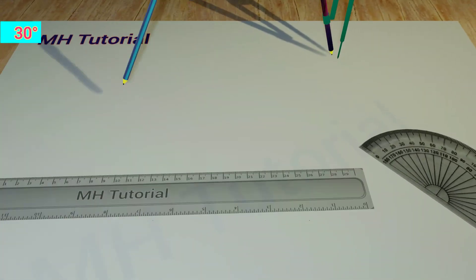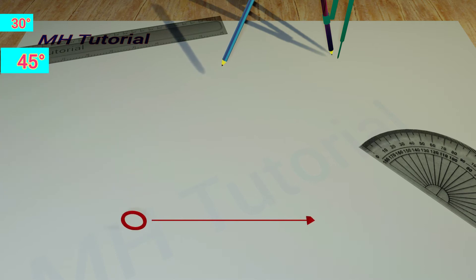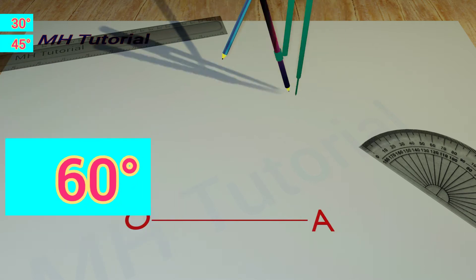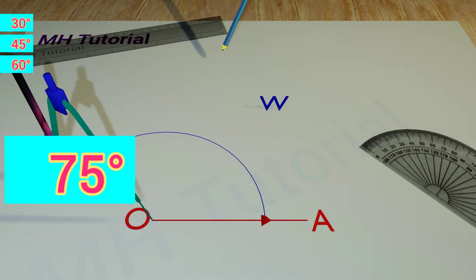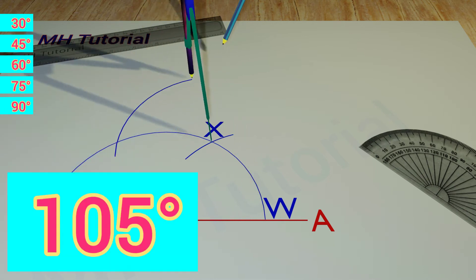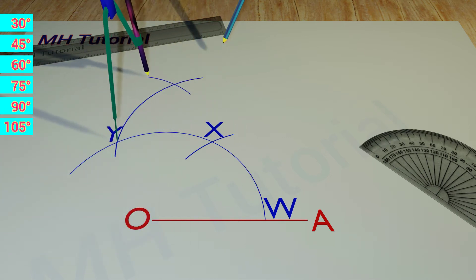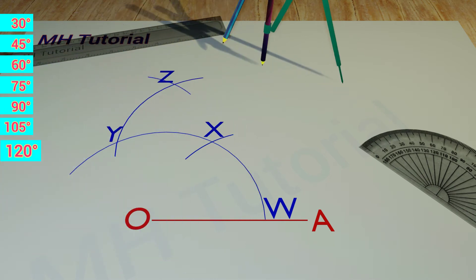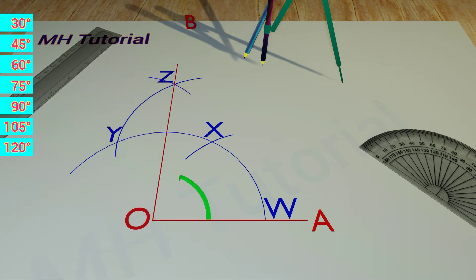How to draw 30, 45, 60, 75, 90, 105, and 120 degree angles using scale and compass only. Let's start.